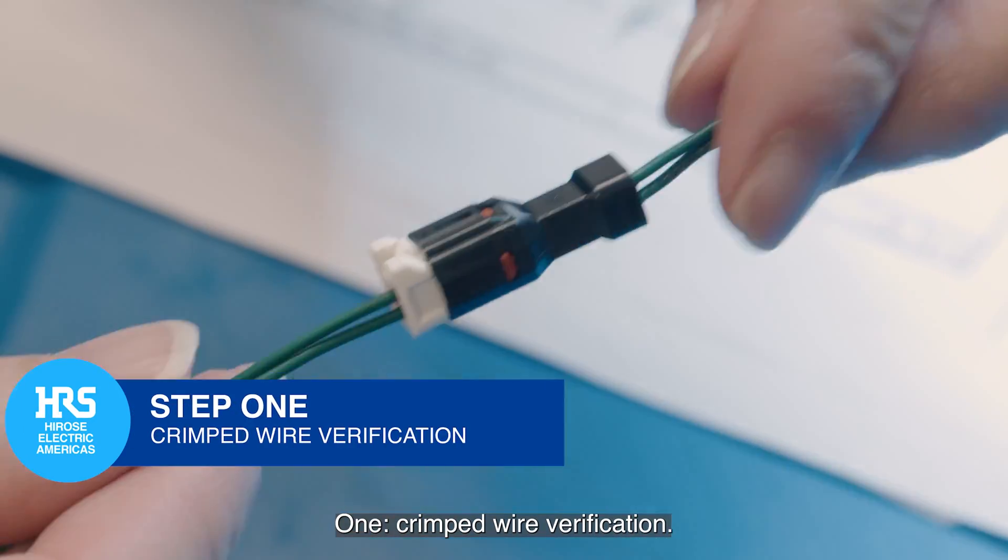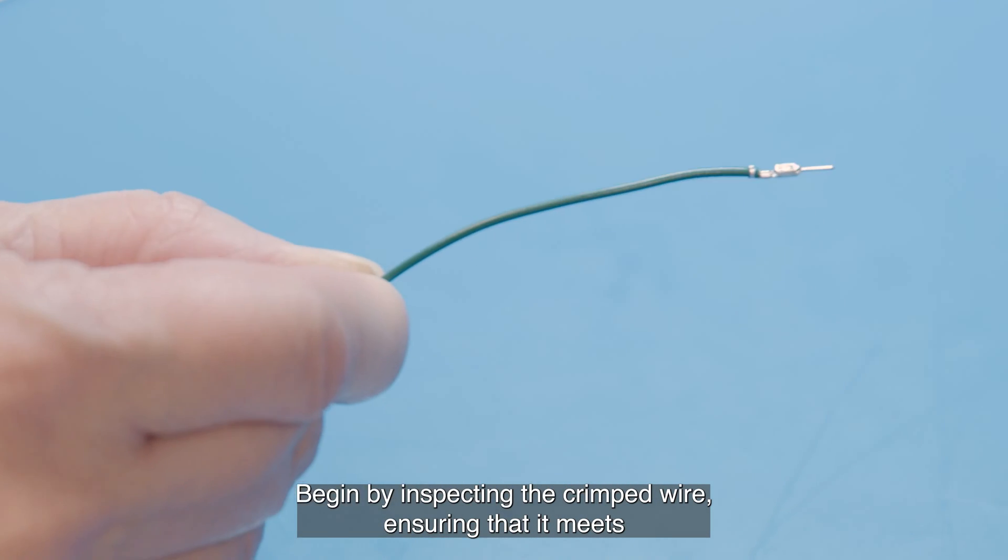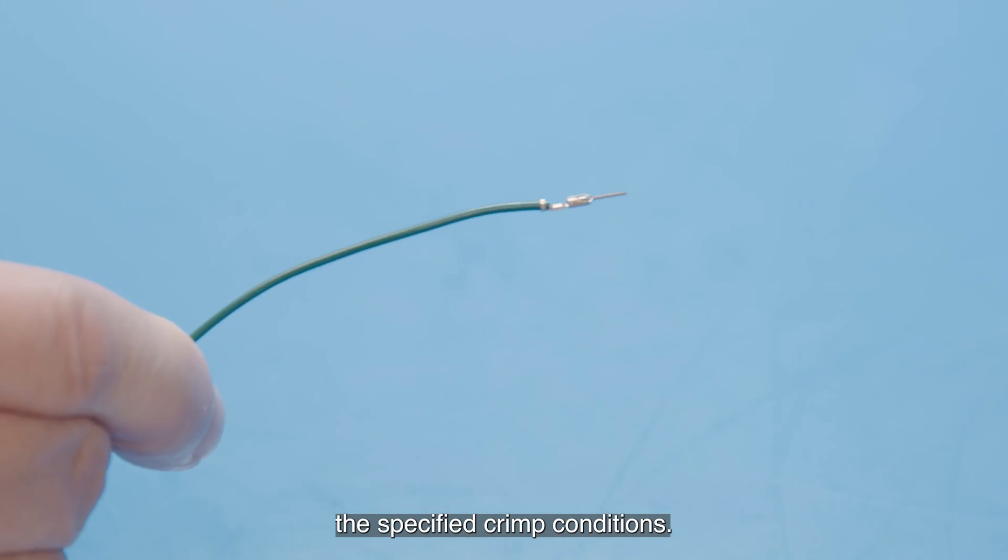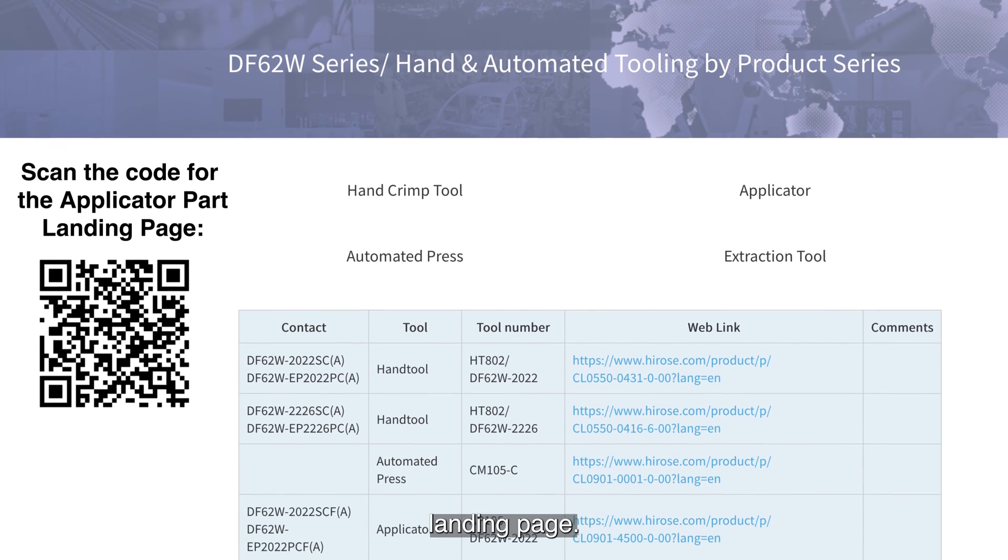1. Crimp Wire Verification. Begin by inspecting the crimped wire, ensuring that it meets the specified crimp conditions. For detailed crimp conditions, refer to the applicator part landing page.